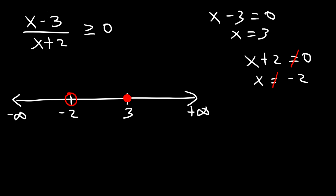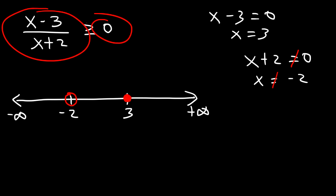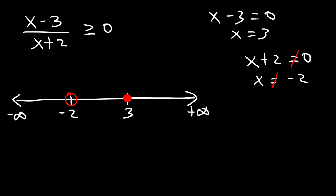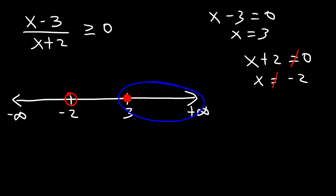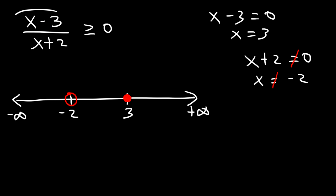Now we need this fraction to be greater than or equal to 0, meaning it has to be a positive number. There are three regions on this number line and we need to determine the sign of each. Let's start with the first region and plug in 4. 4 minus 3 is positive, and 4 plus 2 is positive. A positive divided by a positive gives a positive result.